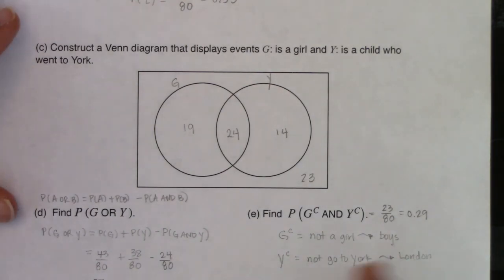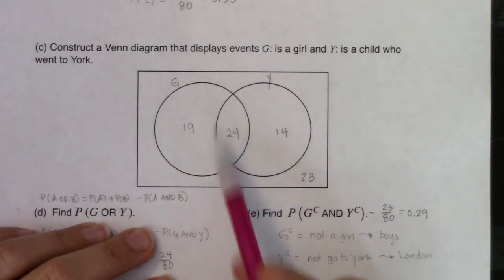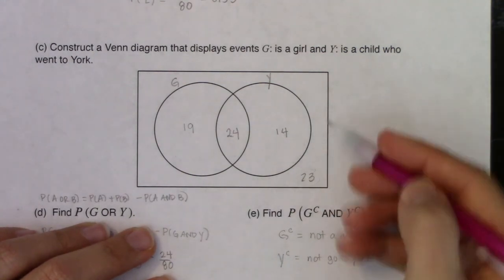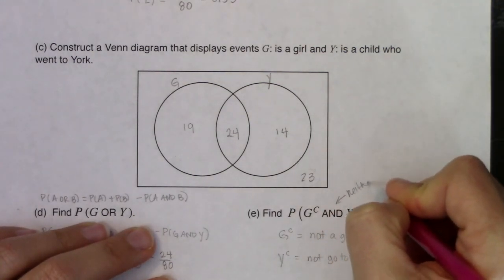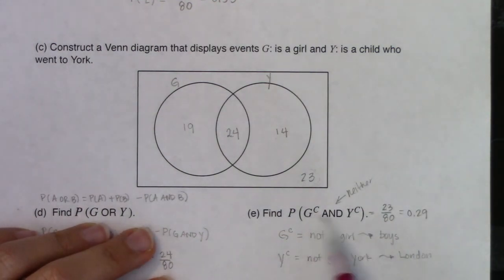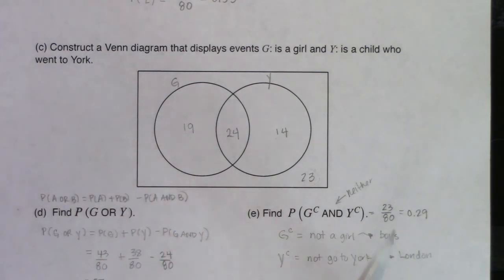On the Venn diagram, I don't want to be in the G circle and I don't want to be in the Y circle — so I'm looking at the folks in neither circle, which is 23, that number hanging outside both circles. So the 'neither' on the Venn gives the same answer: 23 out of 80. We're going to shift focus and head over to tree diagrams next.